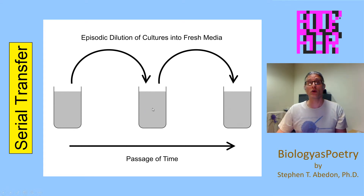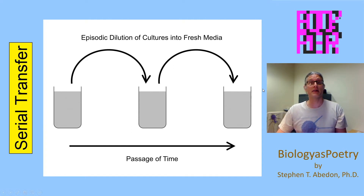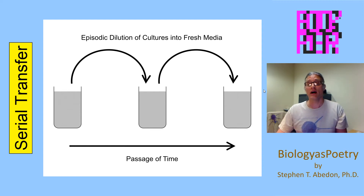You let this population grow within the environment, then take a subset and move it to the next environment. Ideally, when trying to encourage adaptation, you take a relatively large population size in each transfer. That way, any rare mutations that may be beneficial will not be lost with high likelihood due to stochastic means — genetic drift — as a consequence of the transfers.